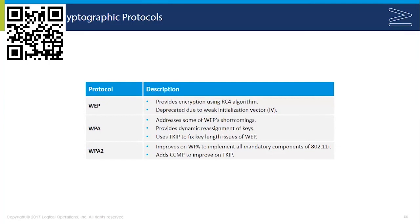Wi-Fi Protected Access, or WPA, addressed some of the shortcomings of WEP. It provided dynamic reassignment of keys using the Temporal Key Integrity Protocol, or TKIP, to fix the key length issues — so the key isn't permanent and would automatically change for every packet. It also used WEP's encryption to provide a 128-bit encryption key. WPA is still vulnerable to an attack in which the contents of small packets can be decrypted.